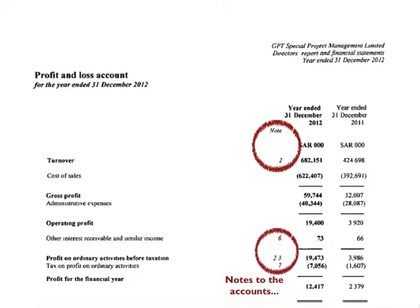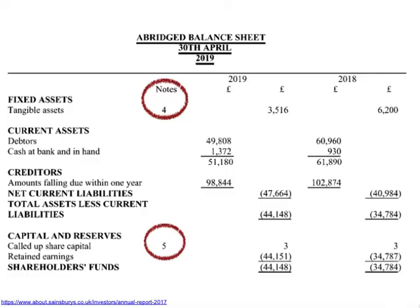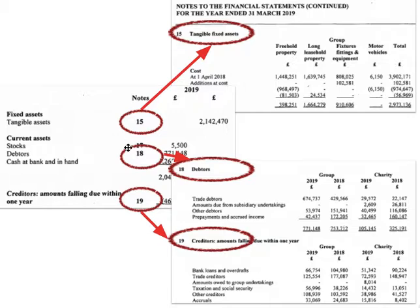These are the notes to the accounts in a cash flow statement. But in a small business, sometimes you won't have a cash flow statement — you will only have what's called the balance sheet. In a balance sheet, you don't have money coming into the business in the sense of turnover and profit. What you have is assets, creditors, liabilities, and capital and reserves. We're going to focus on these notes, which are in the same place in the balance sheet as well. The notes refer to pages later on.